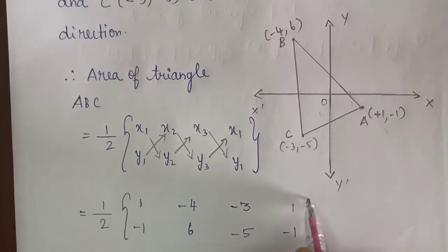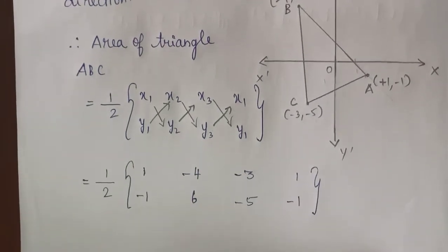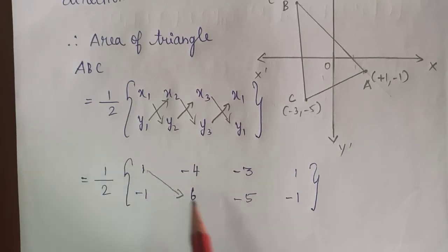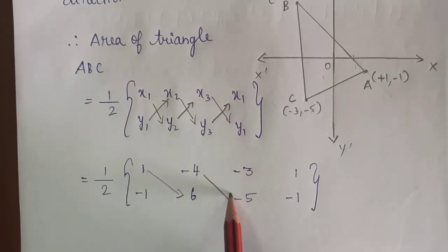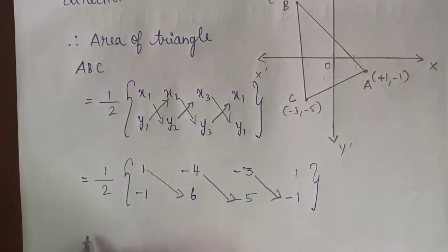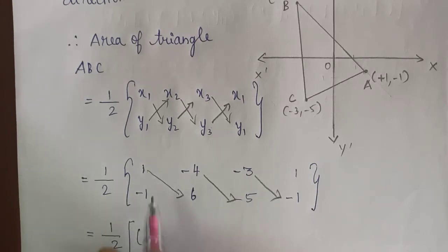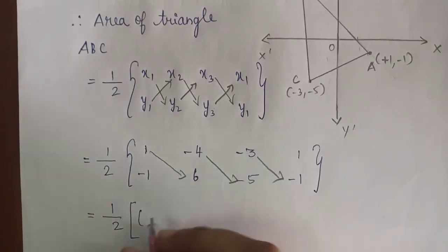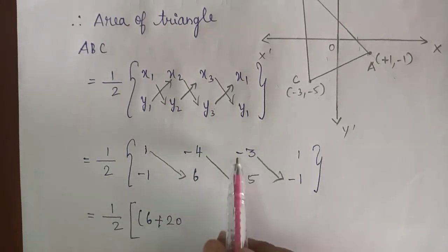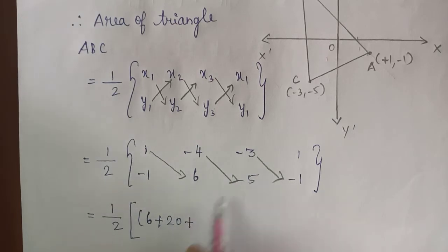The next step is cross multiplication, starting from top to bottom. So: 1 into 6 = 6; minus 4 into minus 5 = plus 20; minus 3 into minus 1 = plus 3.